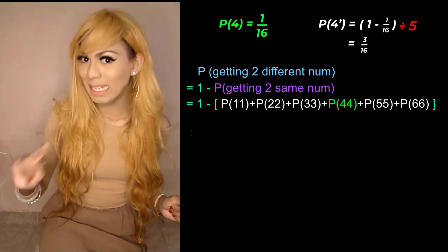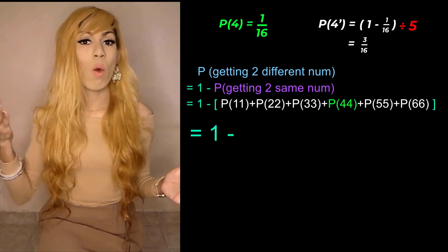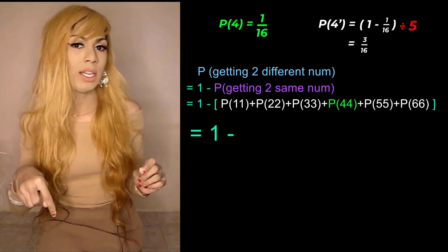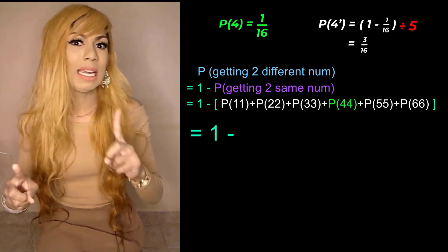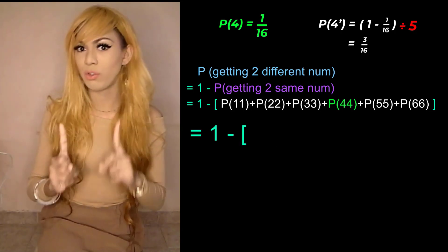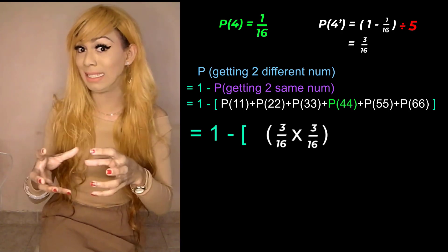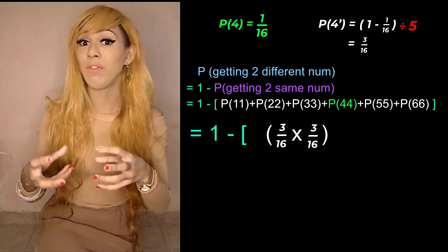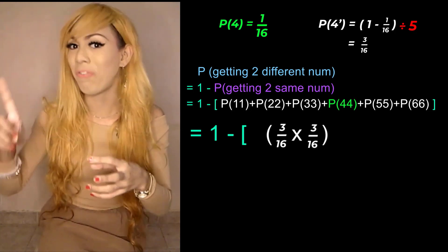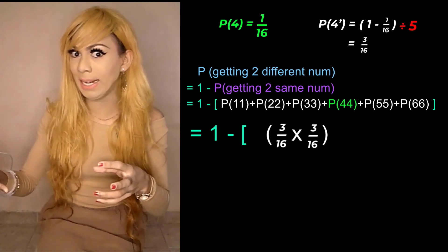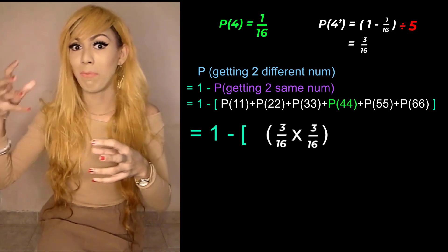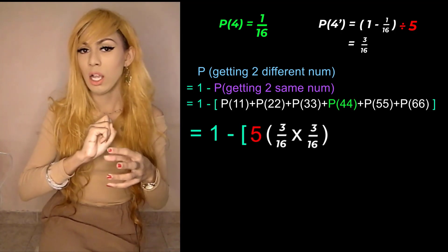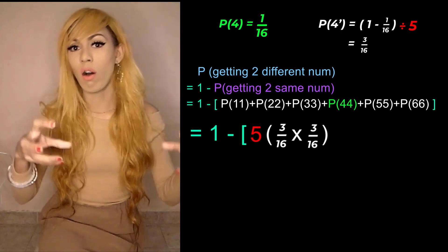We know the probability of getting one is three over sixteen, so to get one-one it would be three over sixteen times three over sixteen. We put that in a bracket. This same value repeats for five cases: one-one, two-two, three-three, five-five, and six-six — so rather than adding them up one by one, we put five in front of the bracket.